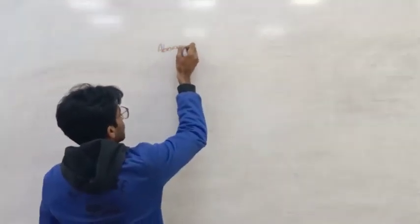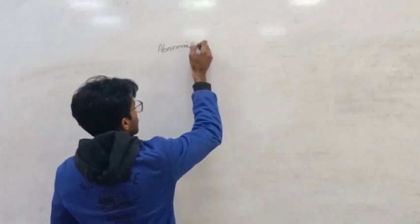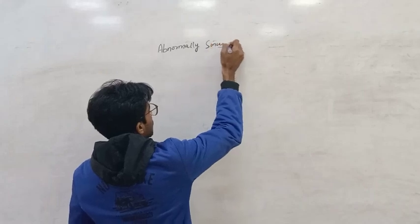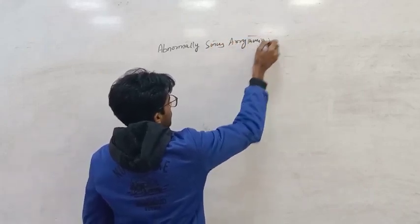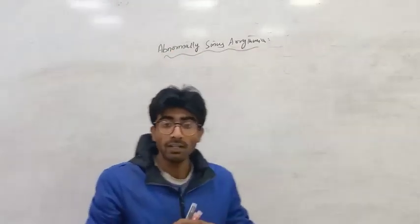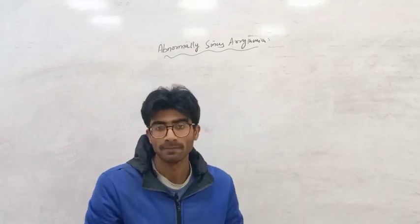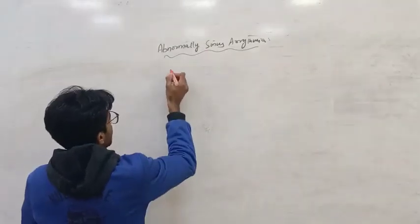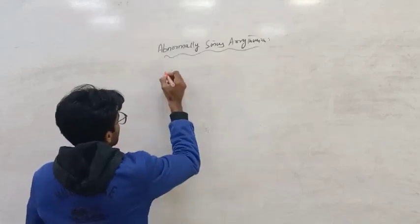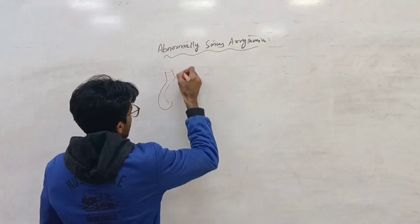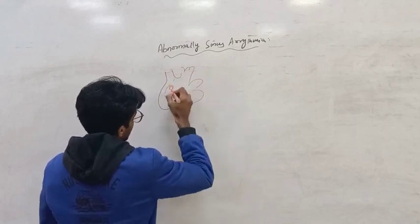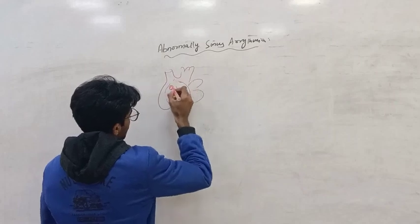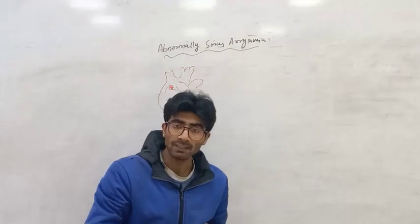Abnormal sinus arrhythmia — we will discuss today this condition in which the rate of the heart increases and decreases due to the effect of the sinus node. We have a heart with a sinus node here; due to the effect of the sinus node, blood pressure increases and blood pressure decreases.